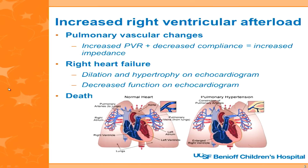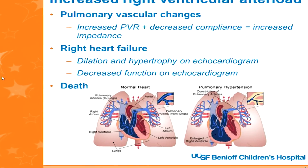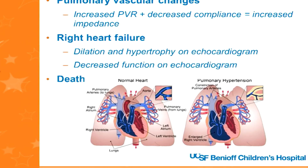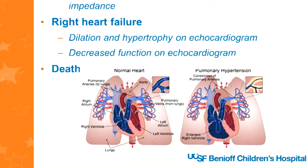You can see decreased function on echo, and ultimately it leads to death — it's a progressive, fatal disease. The picture here shows a normal heart on the left, and on the right you can see how big and boggy the right ventricle is, how dilated it is. As it stretches out it just doesn't squeeze as well, so ultimately these patients die of right heart failure.